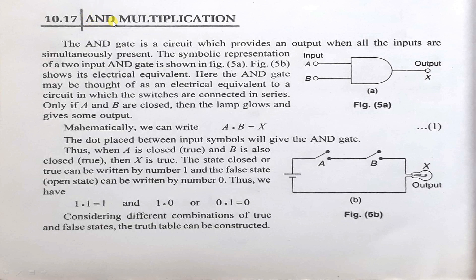This is a logic gate. This is the symbolic representation of AND gate. It may have any number of inputs, but it has only one output. Here in the diagram there are two inputs. A is an input, B is also an input. X is the output.